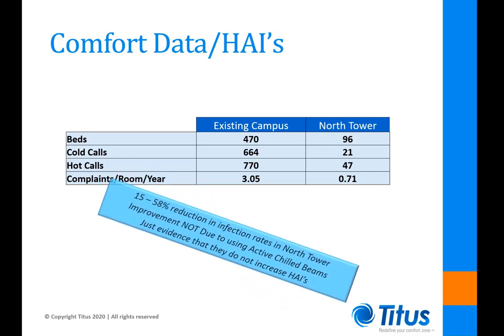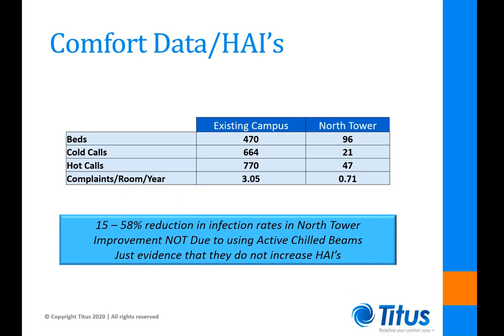One concern about recirculating units in patient rooms is that you are not exhausting the same volume of air as with an all-air system — bringing in two air changes and exhausting two instead of four — meaning the duration of exposure to an infectious aerosol is longer. However, the case study showed no increase in infection rates as a result of using the active beam system versus an all-air VAV system, confirming there was no increase due to the use of recirculating units in these spaces.